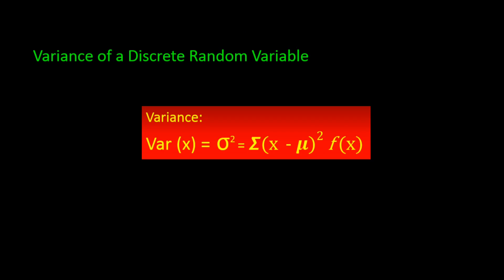We can compute the variance for a probability distribution by multiplying each possible squared difference by its corresponding probability and then summing up those products. We can then get the standard deviation by taking the positive square root of the variance. The formula for calculating the variance is Var(x) = σ² = Σ (x − μ)² · f(x). To calculate the variance of x, we take each x from the mean, square those values, multiply them by the probability of each x occurring, and then sum it up.